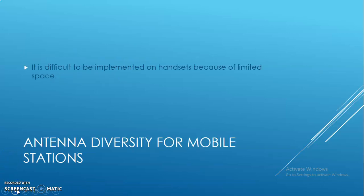Antenna diversity for mobile stations is difficult to implement on handsets because of limited space. Low correlation between the outputs of two antennas can be achieved in cellular handsets with antenna spacing less than 0.2 lambda wavelength.